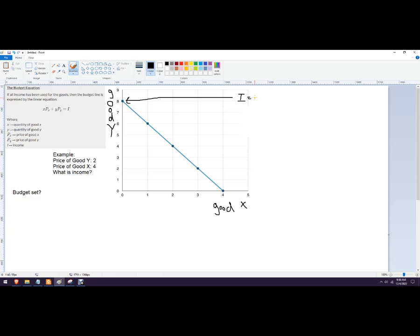So we'll just write out the formula again. This would be the price of good Y times the number of units of good Y plus the price of good X times the number of units of good X. And so we actually know a good bit of this information. We don't know income. We're going to solve for this.